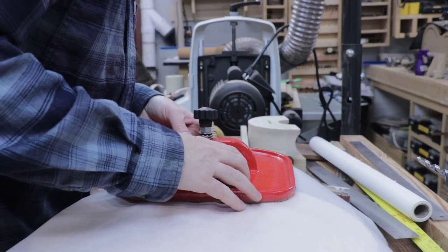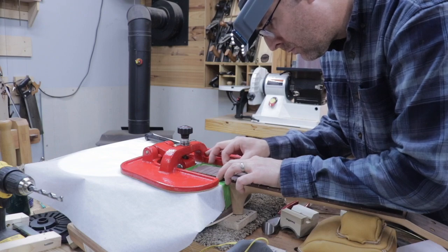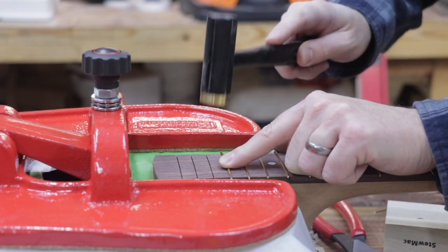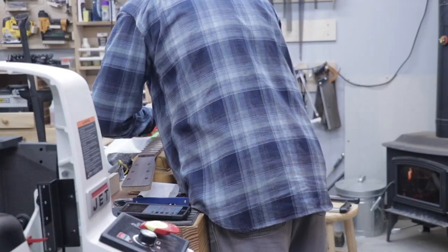The red cast iron device is a Stumac fret buck. It puts counter pressure underneath the fretboard tongue so that you can tap in the frets. This tool is expensive but works very, very well.